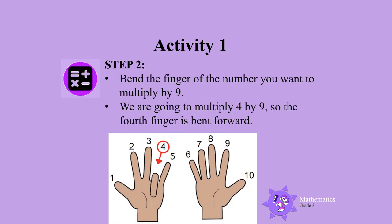Step 2: Bend the finger of the number you want to multiply by 9. In this example, we are going to multiply 4 by 9, so the fourth finger is bent forward.